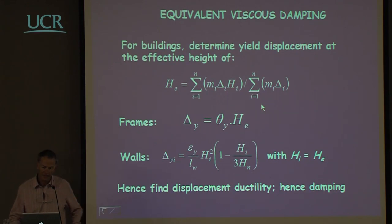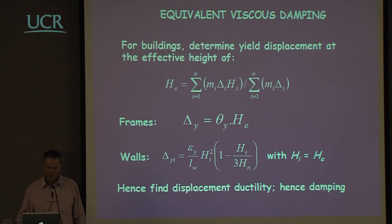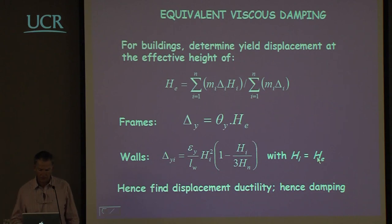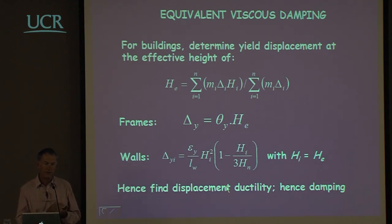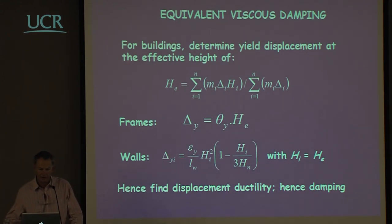This will mean small errors in the ductility calculation, but as already indicated, small errors in ductility don't result in large errors in the structural design forces. For walls, we can calculate the effective height using the yield expression. If we can do that, we can calculate the displacement ductility because we know the yield displacement and we've calculated the characteristic displacement, so we know the ductility demand for the equivalent single degree of freedom system.